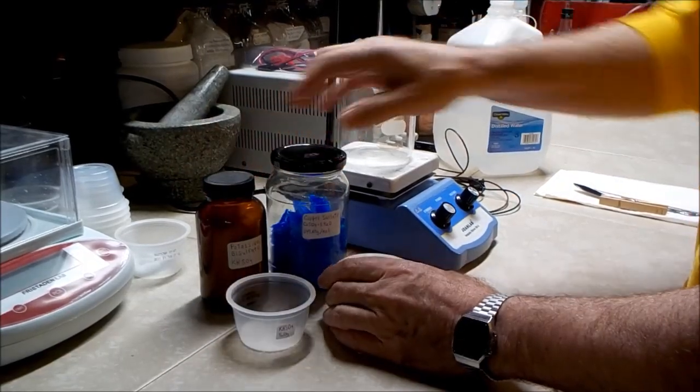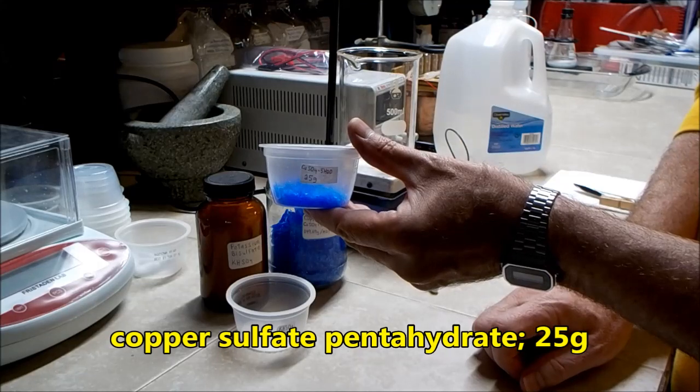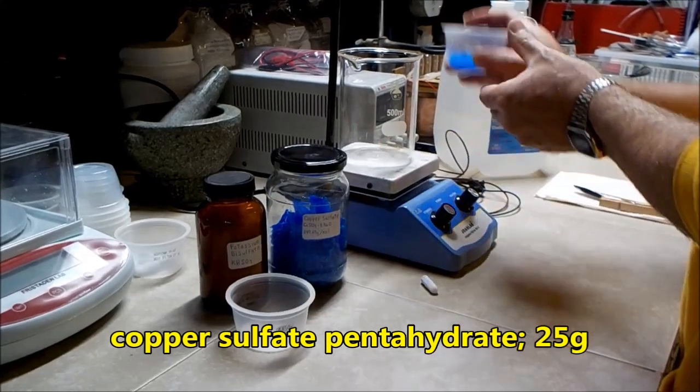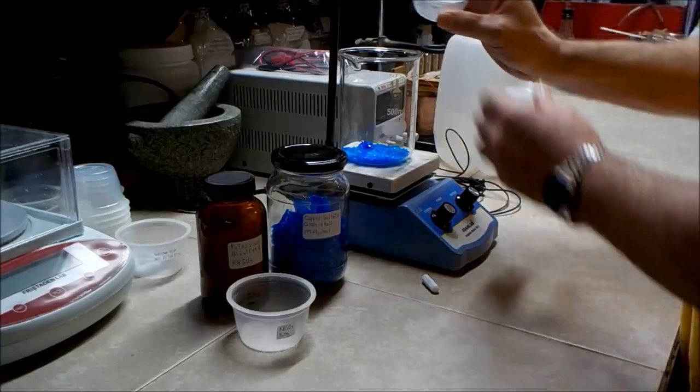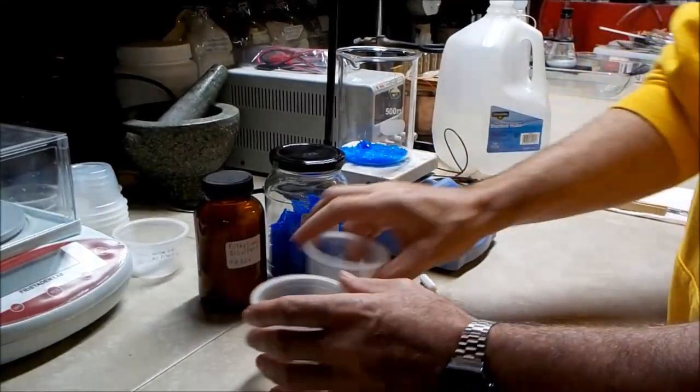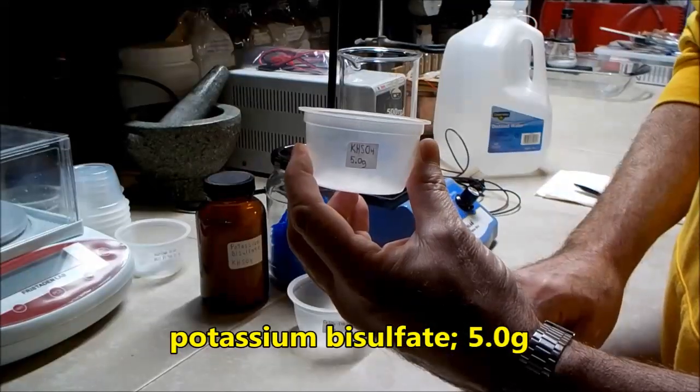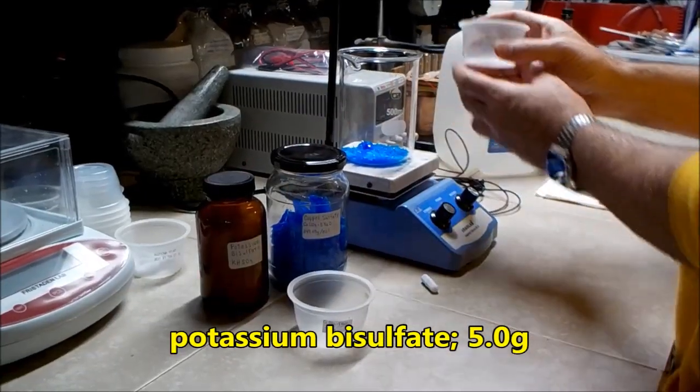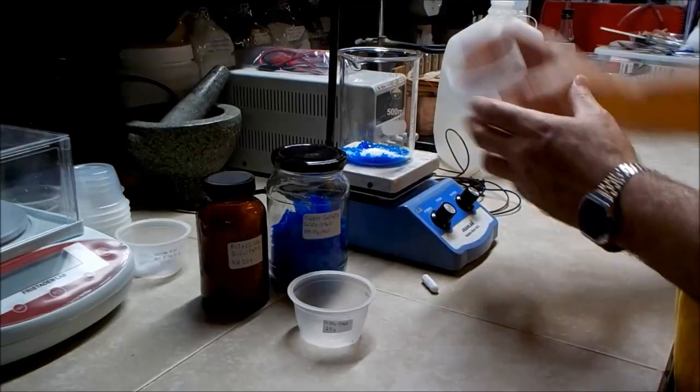What I'm doing here is preparing a copper plating solution. I'm using 25 grams of copper sulfate pentahydrate and 5 grams of potassium bisulfate. These will be dissolved in distilled water to produce a final volume of about 450 milliliters. Then I will apply some heat and a magnetic stir bar to get everything dissolved into solution.